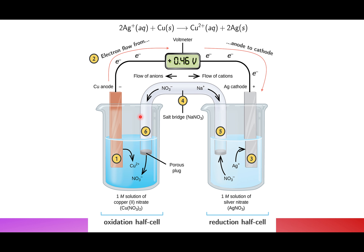The reason oxidation occurs at copper and reduction at silver is because of their reactivity. Based on the reactivity series, copper is more reactive than silver. When we talk about reactive metals, they tend to lose electrons. Copper has a higher reducing power, meaning it has a higher tendency to lose electrons.